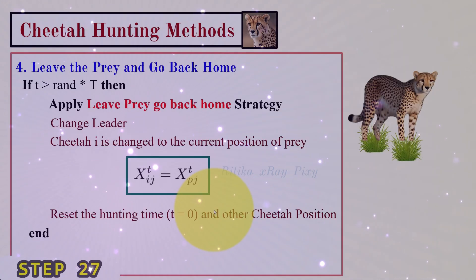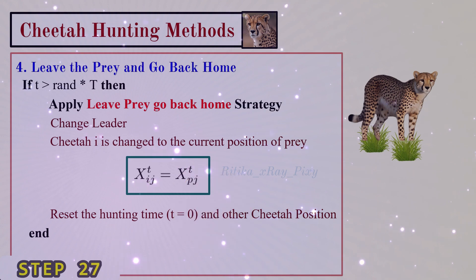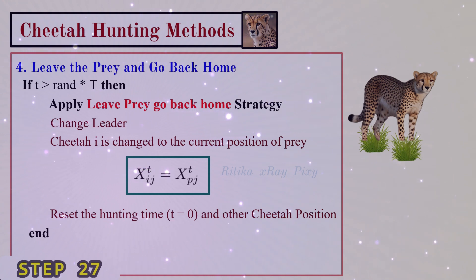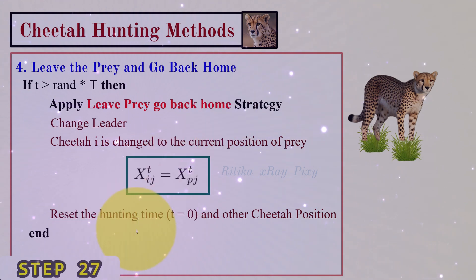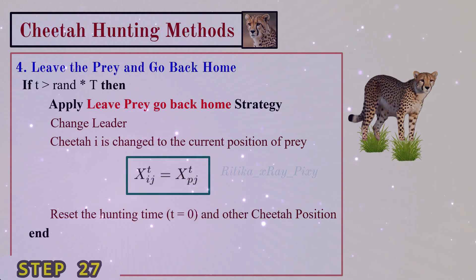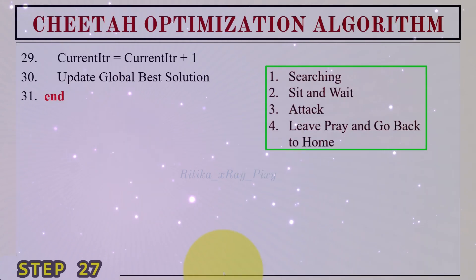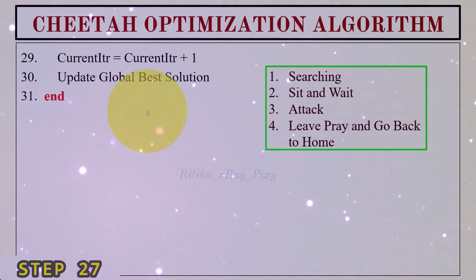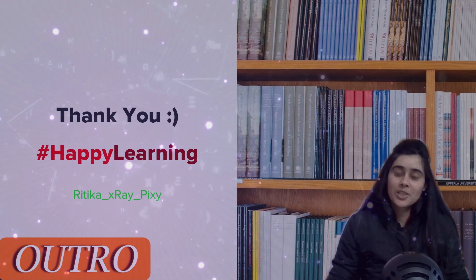In the leave-prey-and-go-back-home strategy, if there is a failure during the hunt, the cheetah returns home to rest and regain energy. The leader's position is set equal to the best solution's position, the hunting time (current iteration) is reset to zero, and the positions of other cheetahs are also reset. The loop then repeats until the stopping criteria is met, at which point the best solution is displayed. That's all about this video — if you have any questions, comment below.